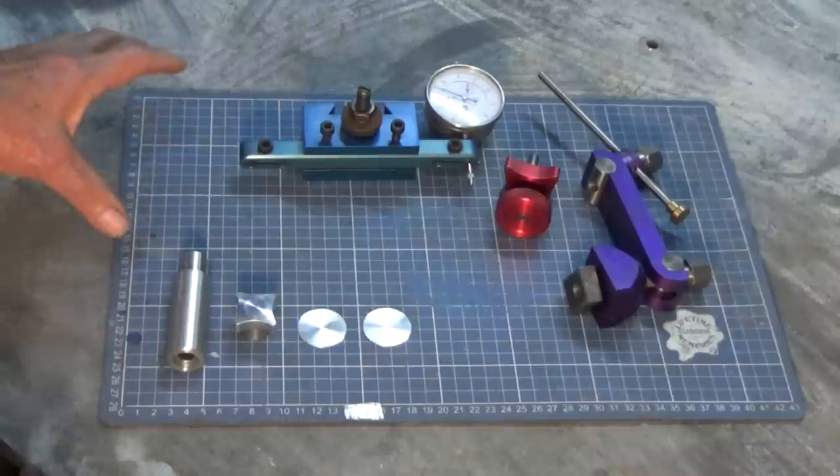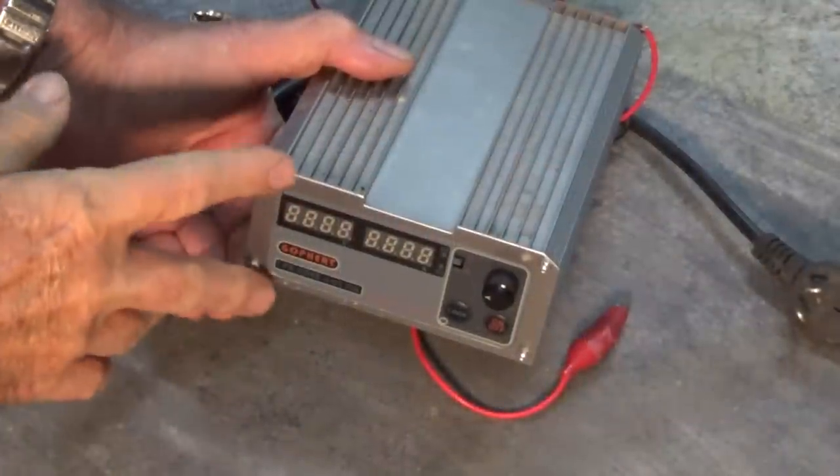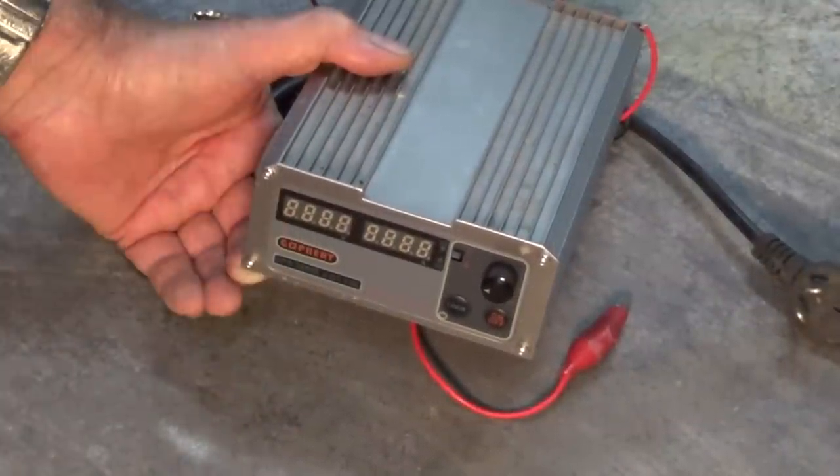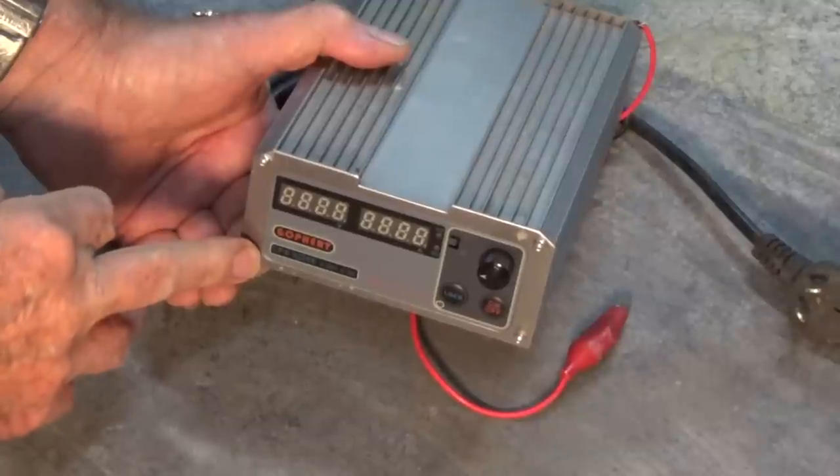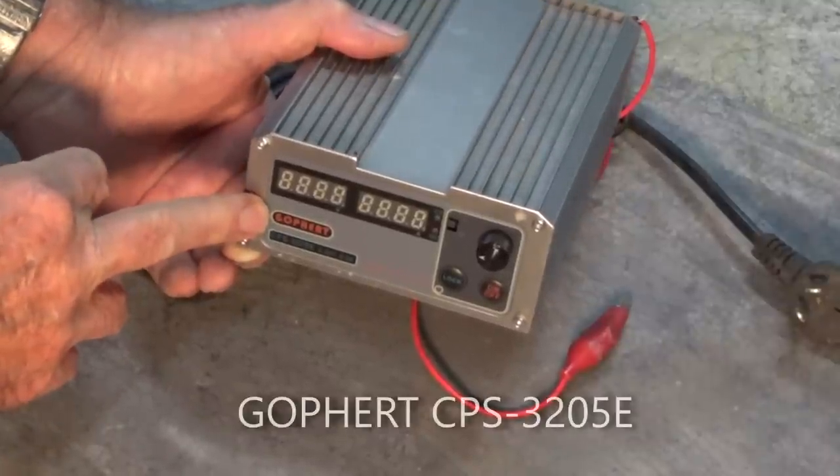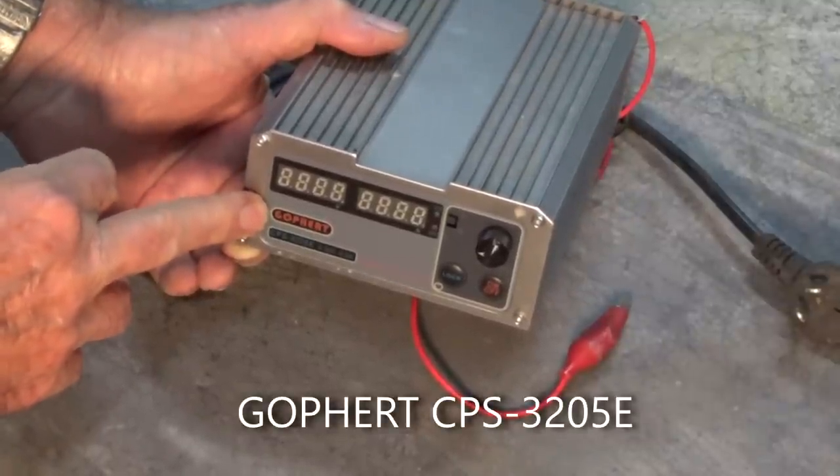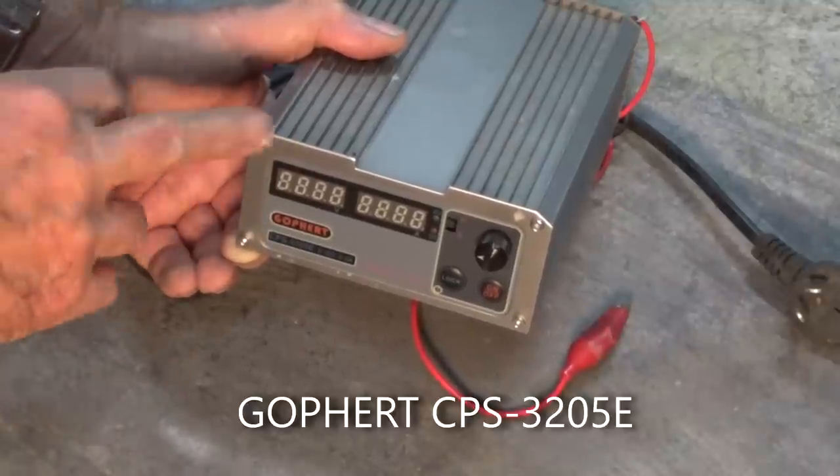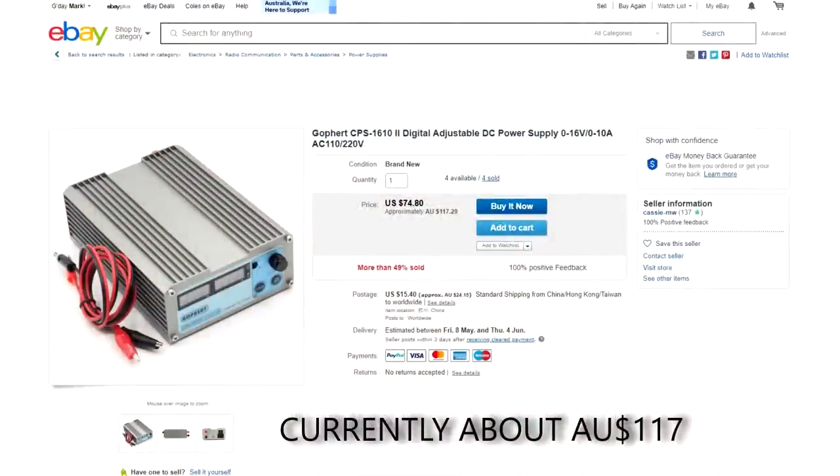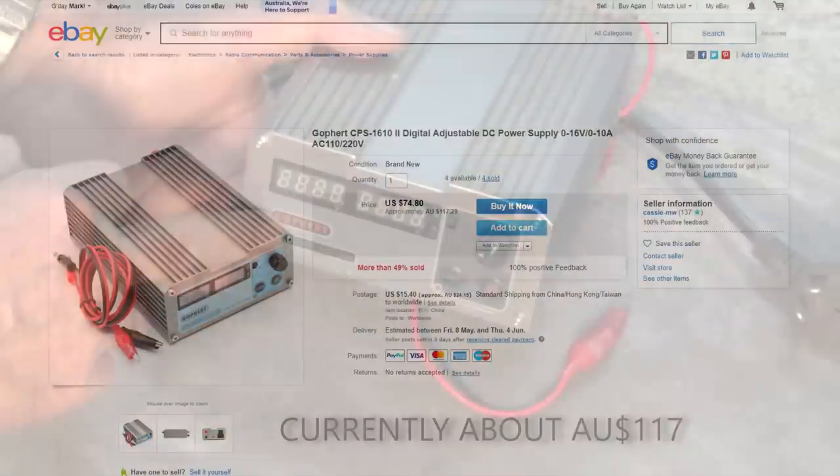Let's have a look at some of the materials and equipment that you'll need. This is probably the single most expensive piece of kit you'll need to buy if you're going to do anodising at home. This is a DC power supply. The brand name is Gophert, G-O-P-H-E-R-T. I bought this on eBay. It wasn't terribly expensive. From memory I think it was about $50-$60.